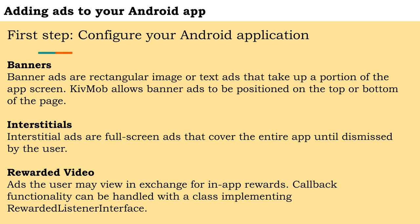Kivmob allows three types of ads. Banner ads are rectangular image or text ads that take up a portion of the app screen. Kivmob allows banner ads to be positioned on the top or bottom of the page. Interstitial ads are full screen ads that cover the entire app until dismissed by the user. And rewarded video ads that the user may view in exchange for in-app rewards.